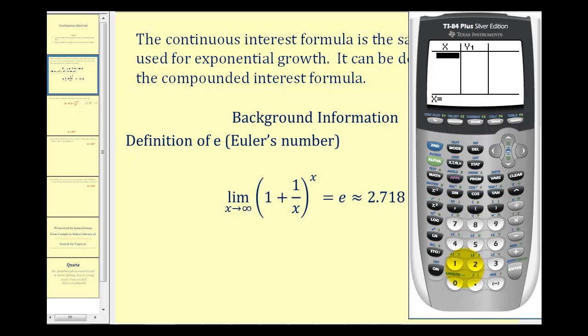So if we type in x equals one, notice how the expression is equal to two. And as we increase x, we're going to see that the y values will approach 2.718. We type in x equals ten, one hundred, and one thousand.